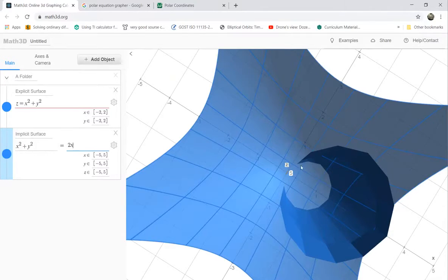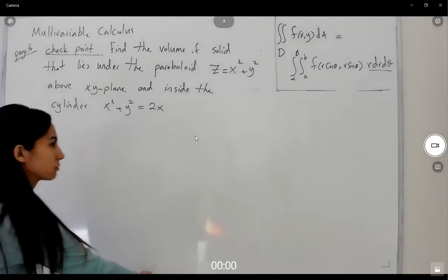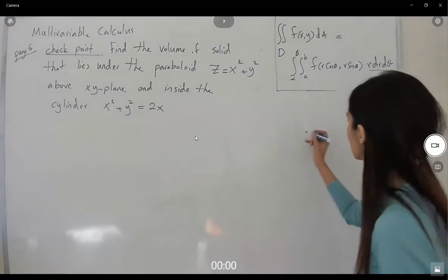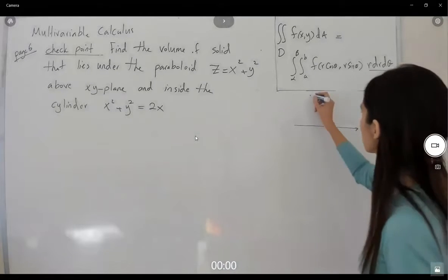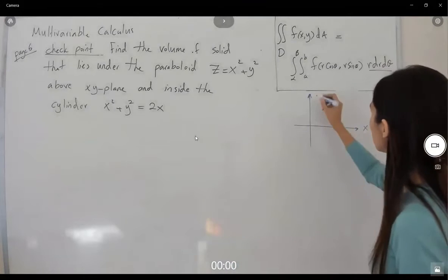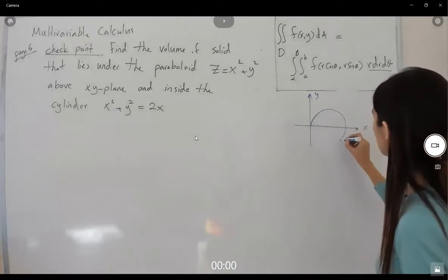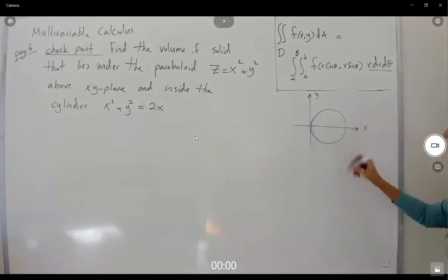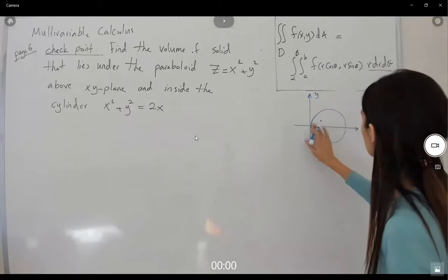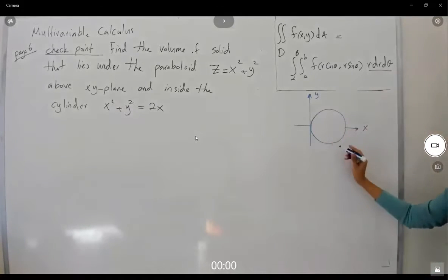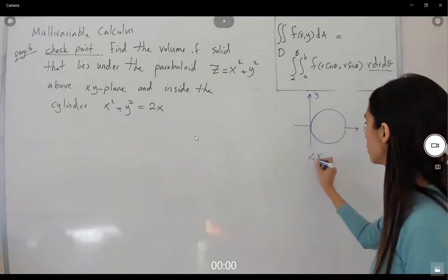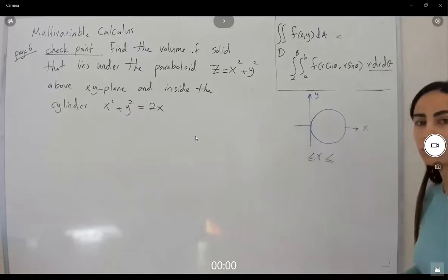Our goal is to find the boundaries for this intersection. Here we have our x, here we have our y, and here you have your circle. We want to find the boundaries for r, the radius, and also for theta.